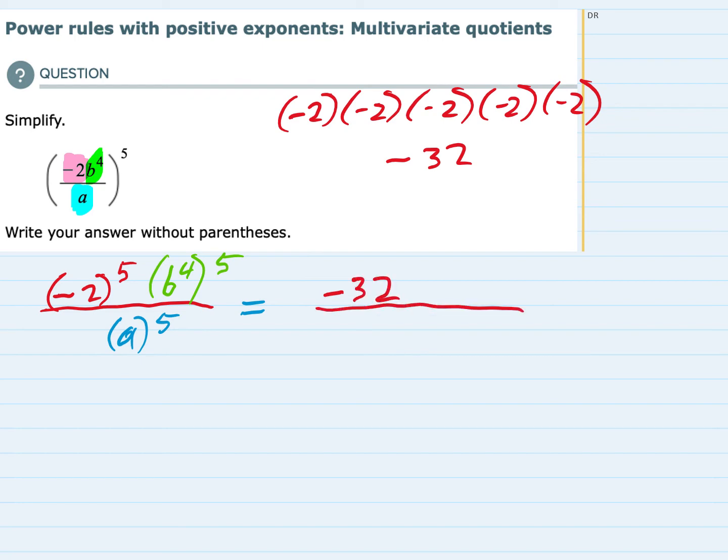For the b's in the numerator we have b to the fourth raised to the fifth power. When we have powers inside and powers outside we multiply those. So 4 times 5 is 20. That's b to the 20.